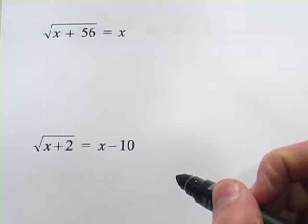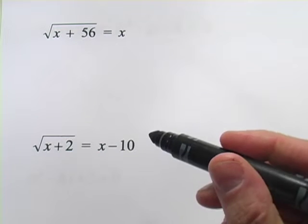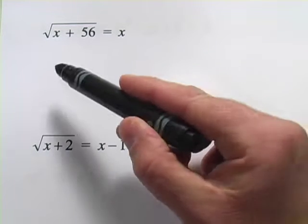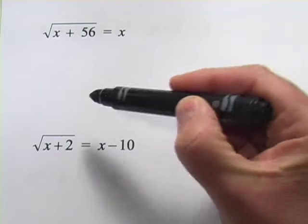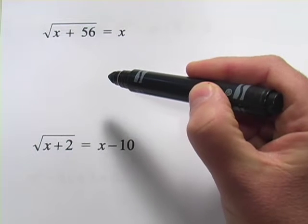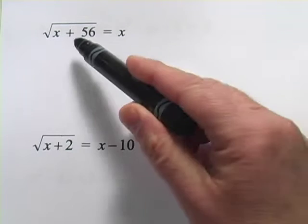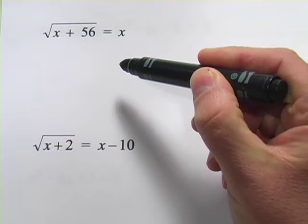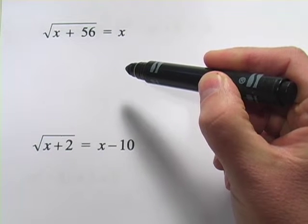These problems don't look like quadratic equations, but they are. They're kind of quadratics in hiding. What we're going to do to approach these is square both sides. Then we'll get a quadratic. We'll solve that for x. But then because we started with a square root, we need to be careful about our solution. So we'll go back and test each of our solutions to see if they work.